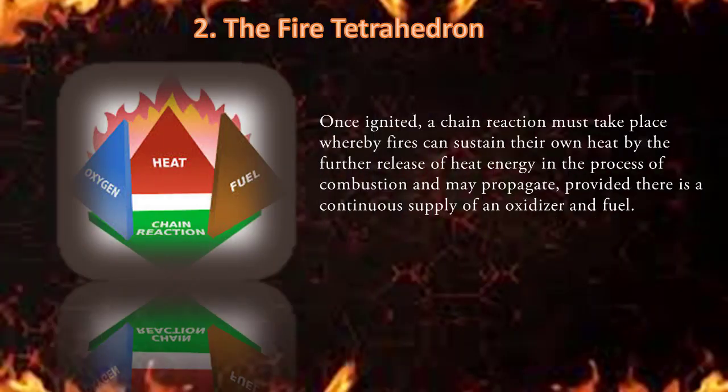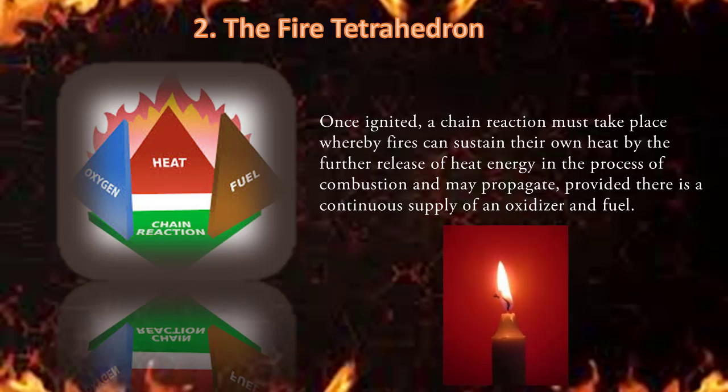The next topic is fire tetrahedron. You can see in your home stove fire, candle fire, or in a factory furnace burner fires, etc. — they are continuous. Once ignited, fires can sustain their own heat by the further release of heat energy in the process of combustion, until the continuous supply of an oxidizer and fuel is available. This fire chain is called the tetrahedron, and it simply illustrates the fire chain reaction.